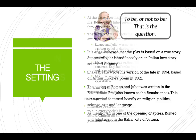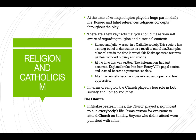So religion. At the time of writing, religion played a huge part in daily life, and Romeo and Juliet references religious concepts throughout the play. There are a few key facts to be aware of. Romeo and Juliet were set in a Catholic society, which had a strong belief in damnation as a result of mortal sin. Examples of mortal sins at the time included bigamy and suicide.